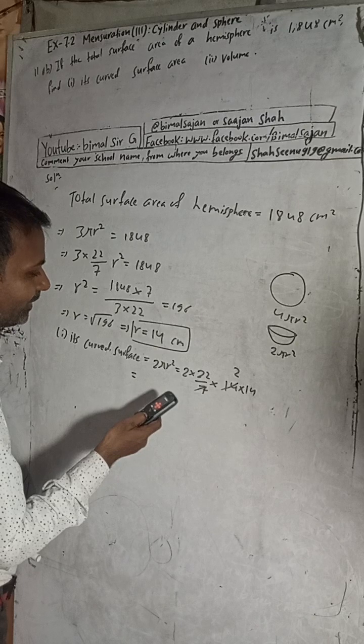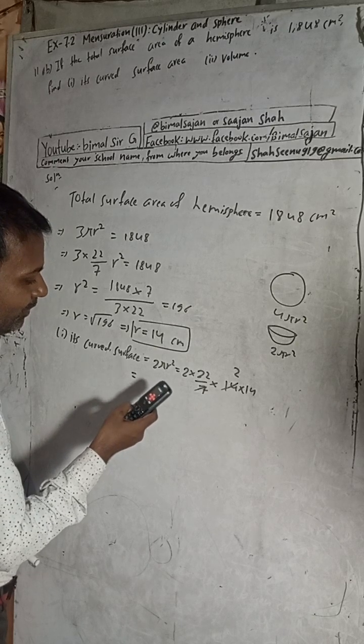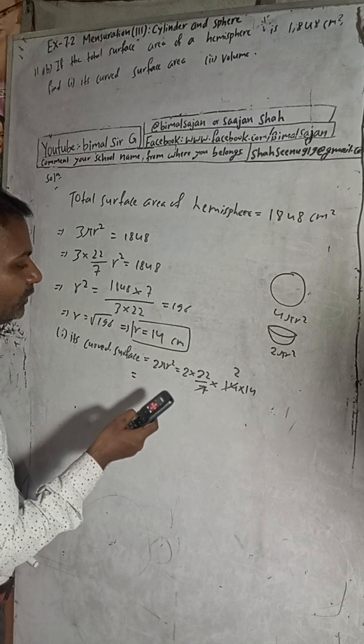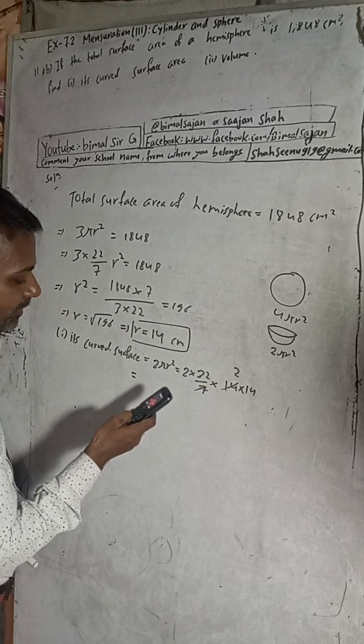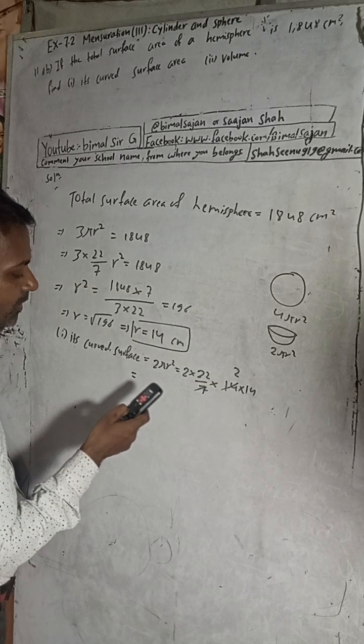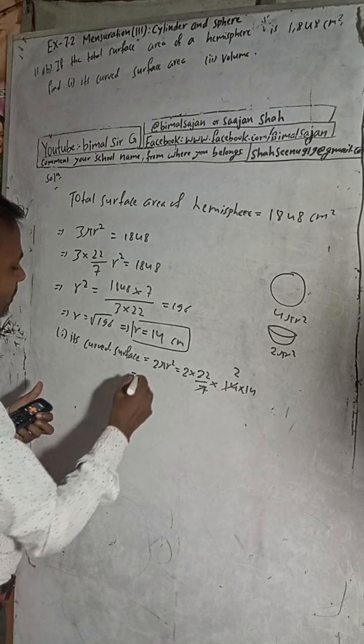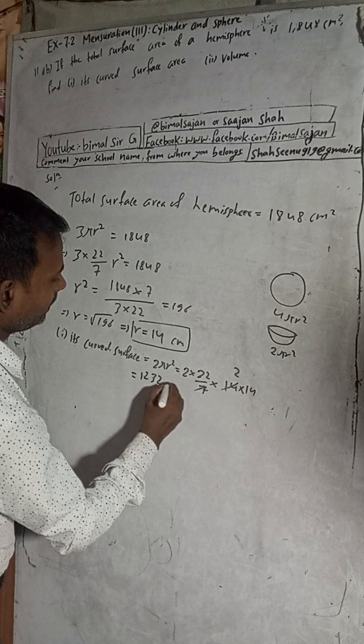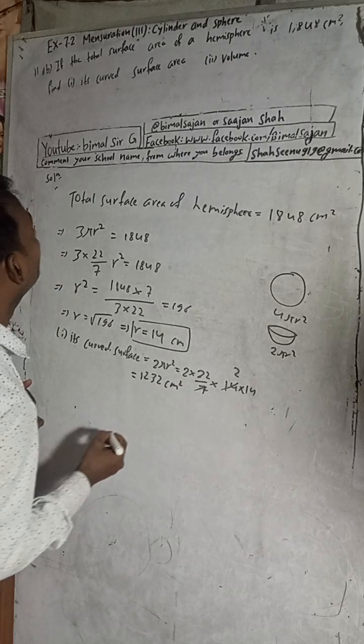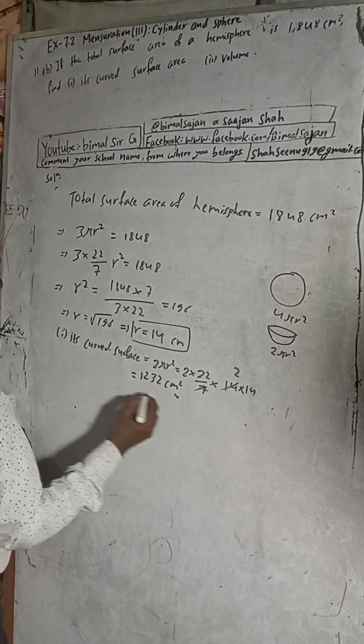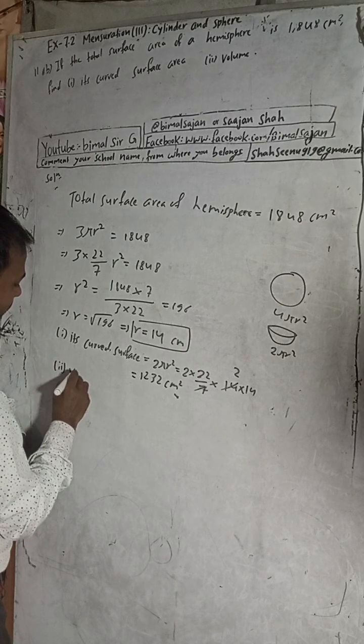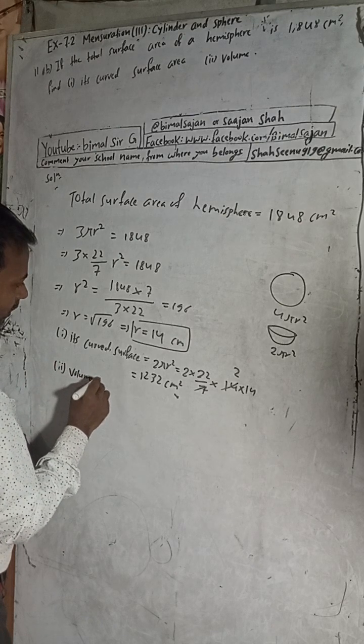Curved surface area equals 2πr², which is 2 times 22/7 times 14 times 14, equals 44 times 28, which equals 1232 cm². Curved surface area, this is the answer.